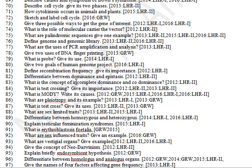Differentiate between dominance and epistasis. What is the concept of incomplete dominance and co-dominance? What is test crossing — give its importance? What is MODY — write its causes? What are pleiotropy and its examples?